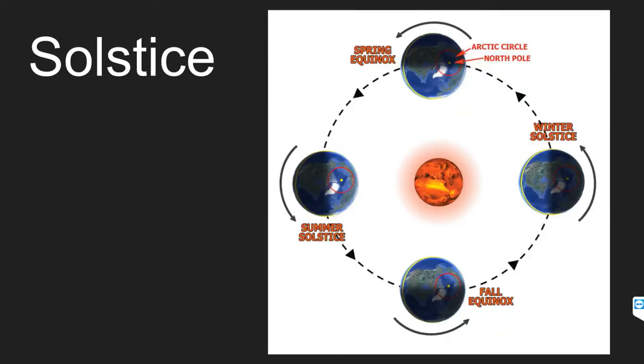Solstice. There are two solstices: the summer solstice and the winter solstice. And the solstices are the moments when winter and summer reach their climax and begin to fall back towards each other.